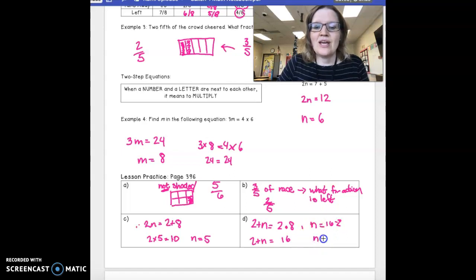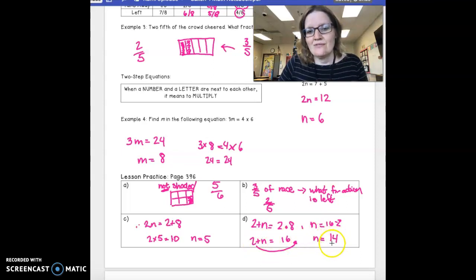And that lets me know that n equals 14. So, see how I took my 2 and I've moved it over here. I subtracted it on this side and I subtracted it on this side. And that ends up giving me 14.